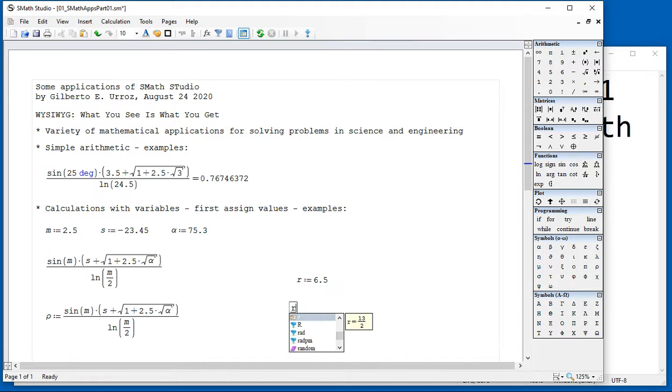If you type R equals below that result, SMAS Studio confirms that your variable has that particular value. If you type it above, it will show an empty result because R hasn't been defined above this particular location. So keep that in mind - variables get defined using the definition operator or assignment operator, and then they keep that value below in the worksheet.